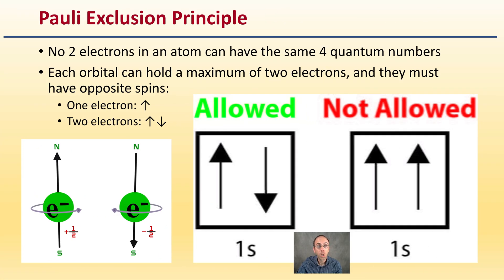So what is the Pauli Exclusion Principle? It means that no two electrons in an atom can have the same four quantum numbers. Each orbital can hold a maximum of two electrons, and they must have opposite spins.